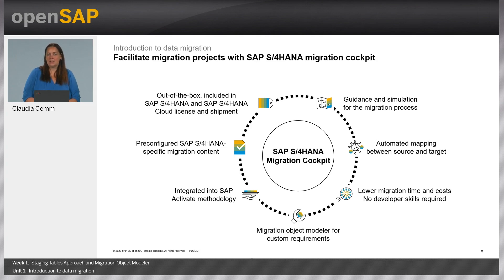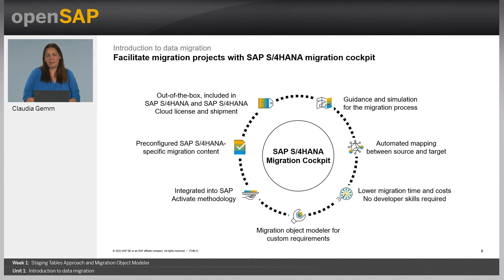The migration cockpit covers the automated mapping logic between source and target system. Coming from any legacy system, the data will be assigned automatically to the data structure of the S/4HANA data model. Providing such a migration tool should lower your migration time and costs. And as long as you keep working with the standard objects, no development skills are required. If you have additional requirements for your migration content, there is a modeling environment available where you can create or adapt migration objects to your own needs. The Migration Object Modeler is a topic starting in Unit 5 of this week.